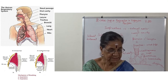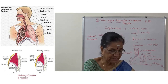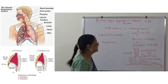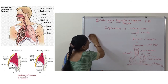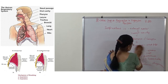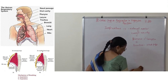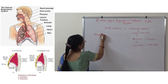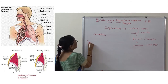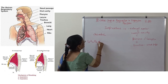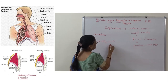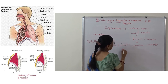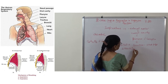Now, cellular respiration. There are two types: one is aerobic respiration and another is anaerobic respiration. The equation for aerobic respiration is: C₆H₁₂O₆ + 6O₂ → 6CO₂ + 6H₂O + 2900 kJ of energy.